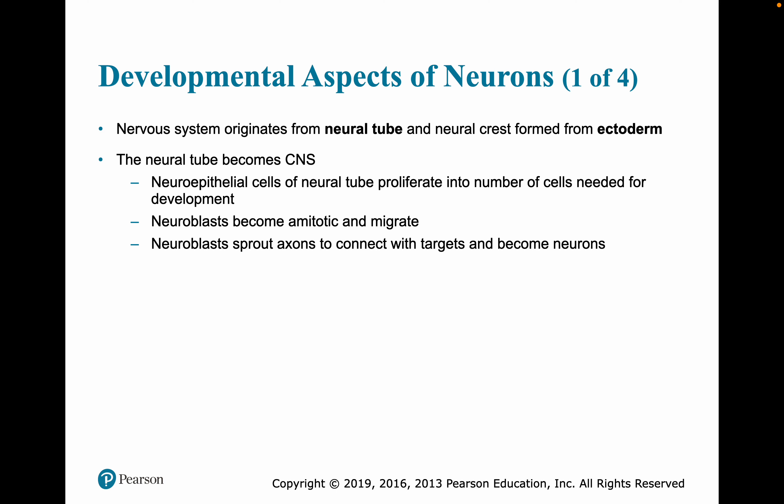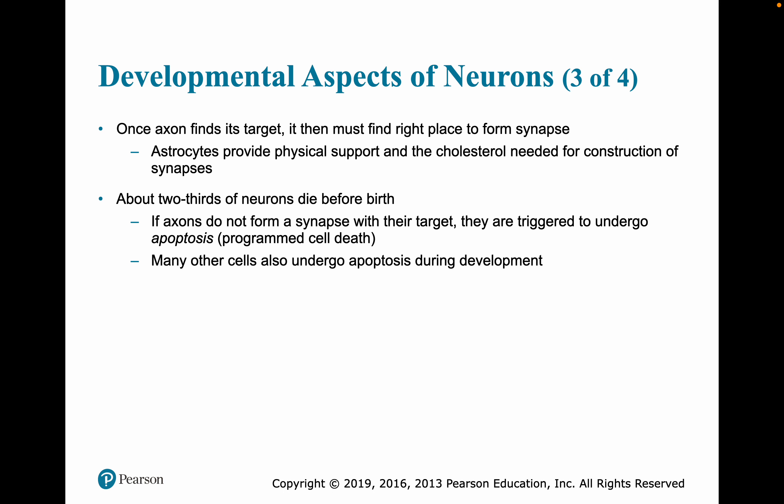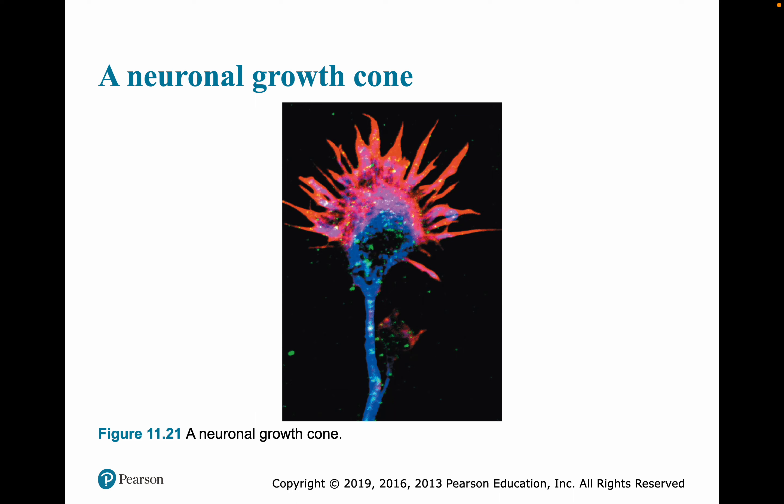Developmentally, we begin with a neural tube formed in the ectoderm; the neural tube becomes the central nervous system. There is a growth cone as neuron axons crawl towards where they are going. Once an axon finds its target, it must find a place to form a synapse. About two-thirds of our neurons die before birth — if they don't find a place for a synapse, they undergo apoptosis, but this is an important part of development. During childhood and adolescence, learning reinforces certain synapses and eliminates others. Recent evidence suggests genes that promote excessive synaptic pruning may predispose an individual to schizophrenia. Neurons are amitotic after birth, though some special neuron populations continue to divide — found in the olfactory system and the hippocampus. Here we see a neural growth cone, a neuron looking for a connection.